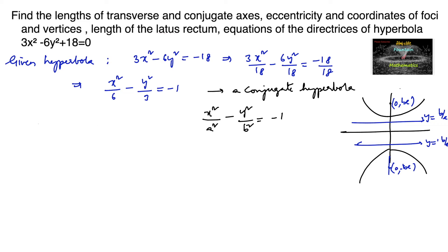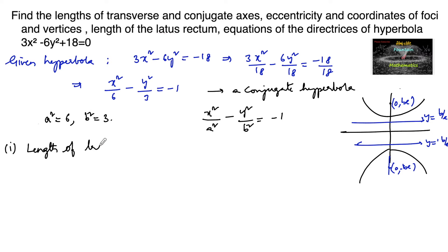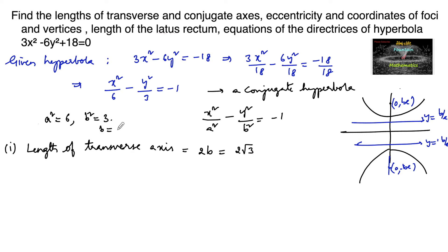Comparing the given equation, we have a² equals 6 and b² equals 3. First, the length of the transverse axis equals 2b, which is 2√3, since b² equals 3 means b equals √3.